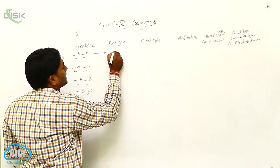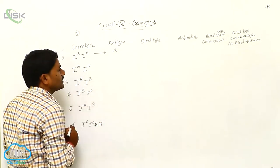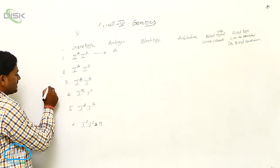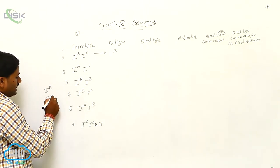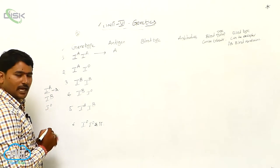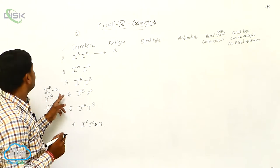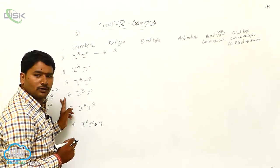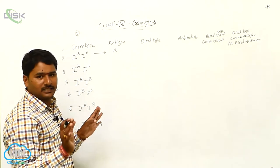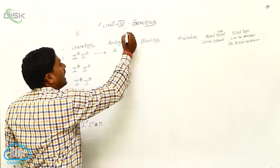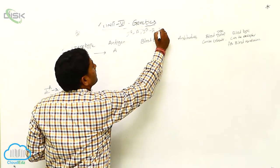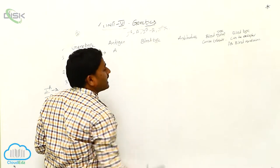There are 3 alleles in blood groups: IA, IB, and I0. IA is responsible for producing A antigen. IB produces B antigen. I0 produces no antigen. So genotype IAIA produces A antigen, and genotype IAI0 also produces A antigen.